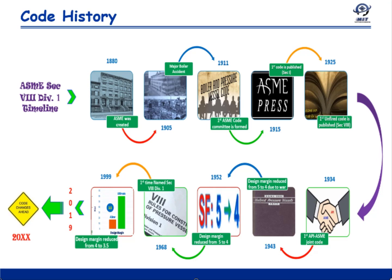In 1968, the original code Section 8 was named ASME Section 8 Division 1. And as an alternate rule, ASME Section 8 Division 2 was launched — this was the year when the first Division 2 code was issued.